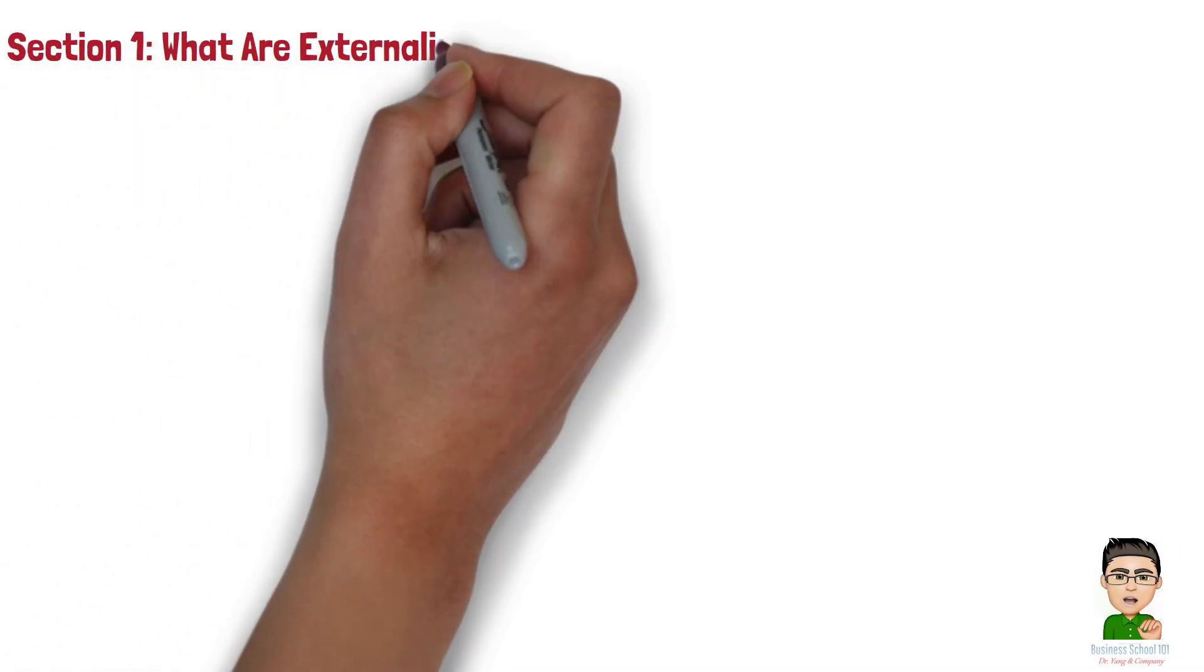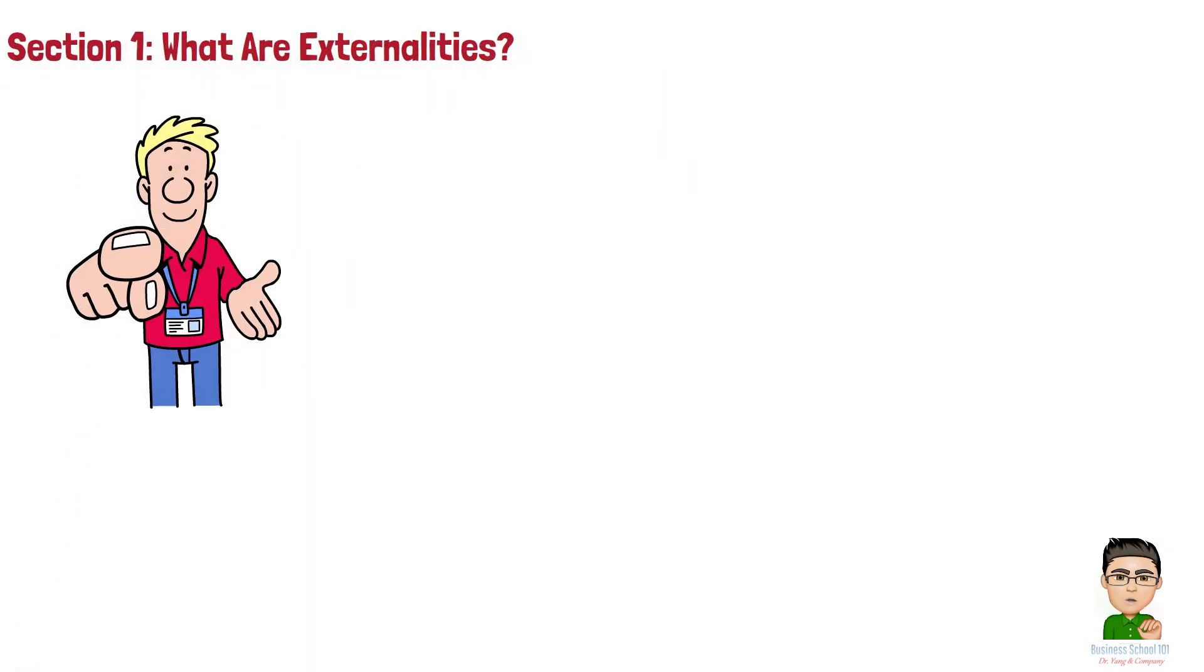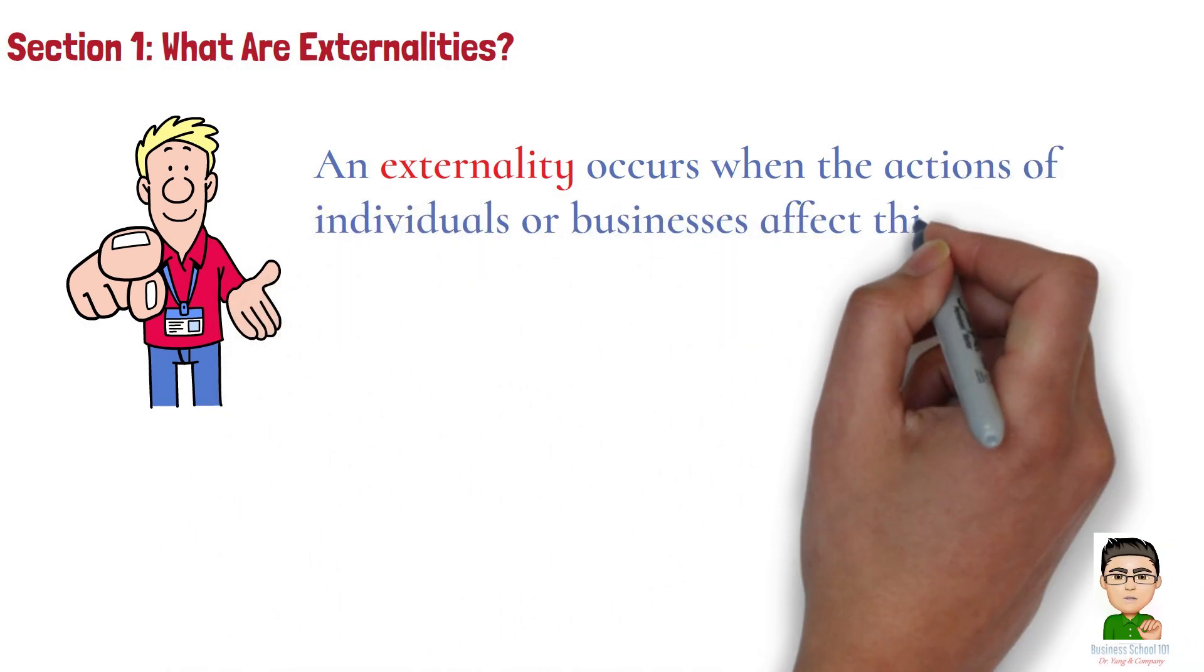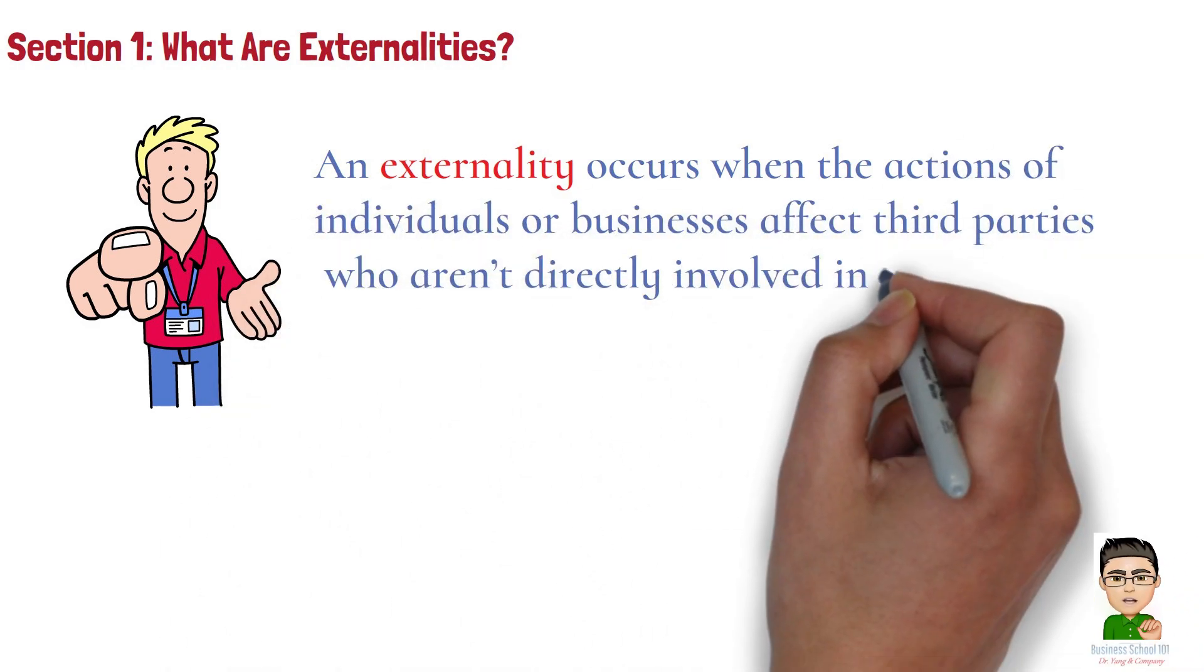Section 1. What are externalities? Let's start with the basics. An externality occurs when the actions of individuals or businesses affect third parties who aren't directly involved in the transaction. These effects can be positive or negative.